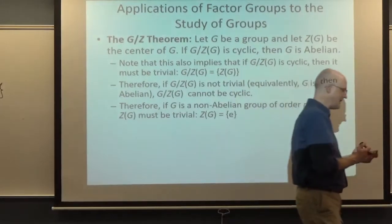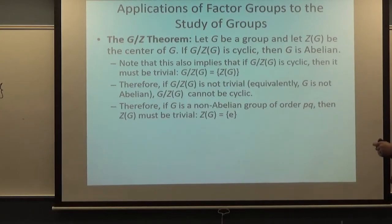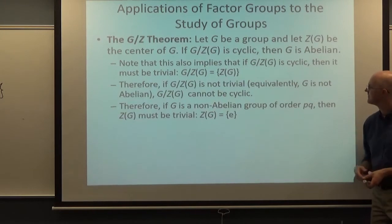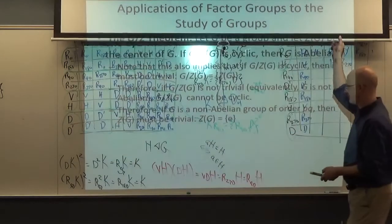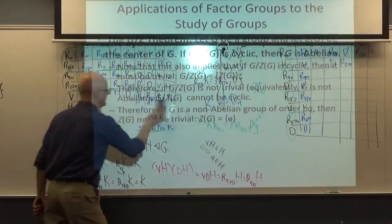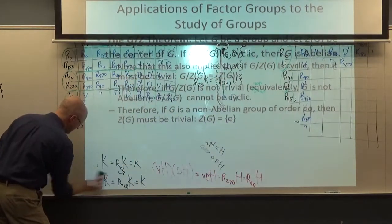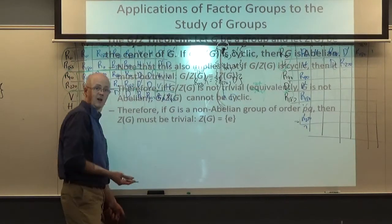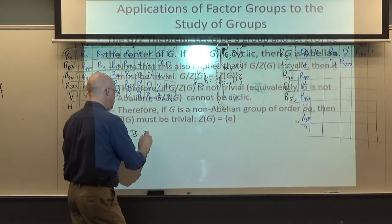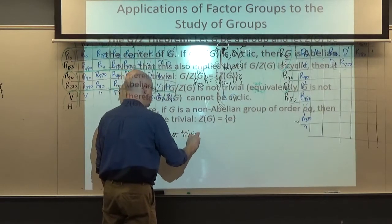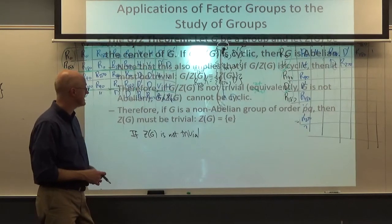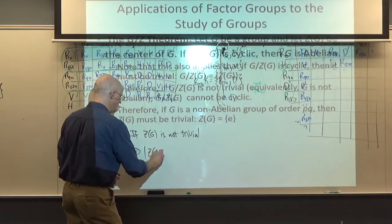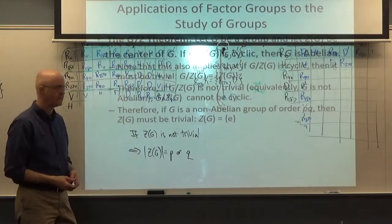As another application: if G happens to be a non-abelian group whose order is the product of two distinct primes P and Q, then the center must be trivial. Why? Argued by contradiction: if Z(G) is not trivial, since G is not abelian, it doesn't equal G itself, so it must be a proper non-trivial subgroup of G. Its order must be P or Q by Lagrange's theorem, since the order of G is PQ.